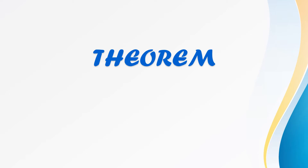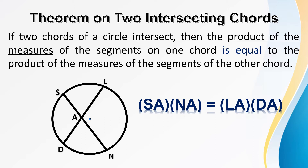Now let's proceed to the first theorem: the Theorem on Intersecting Chords. If two chords of a circle intersect, then the product of the measures of the segments on one chord is equal to the product of the measures of the segments of the other chord. Looking at the formula: line segment SA times line segment NA is equal to line segment LA times line segment DA.